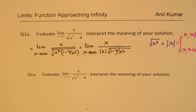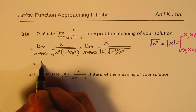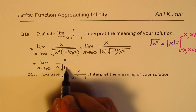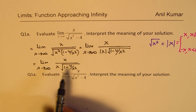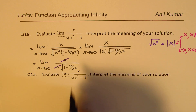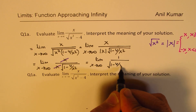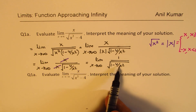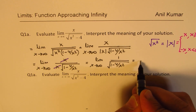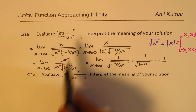When x is approaching positive infinity, absolute value of x equals positive x. So we write this as the limit as x approaches infinity of x over x times square root of 1 minus 4 over x squared. The x and x cancel, giving us the limit of 1 over square root of 1 minus 4 over x squared. As x approaches infinity, 4 over x squared approaches 0, so we get 1 over square root of 1, which equals 1. The limit is 1.